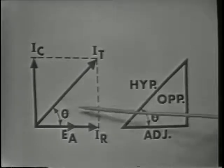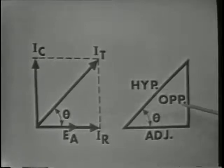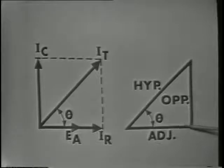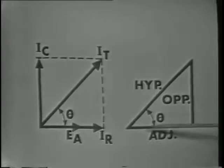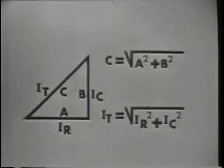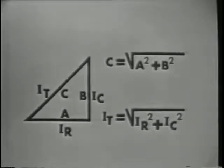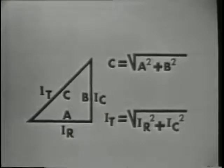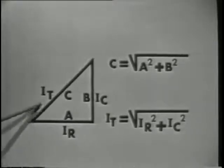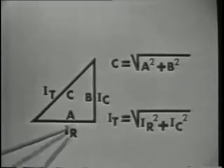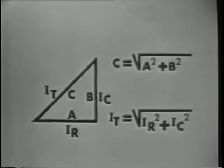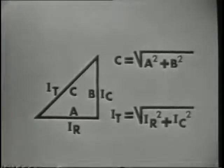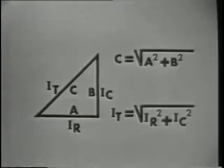Since the circuit currents are so closely related to the sides of the triangle, the same geometric theorems can be applied. Thus side C, the hypotenuse, is equal to the square root of side A squared plus B squared. Therefore, IT or the total current is equal to the square root of IR squared plus IC squared. This method is much more accurate than measuring the vector on the graph.